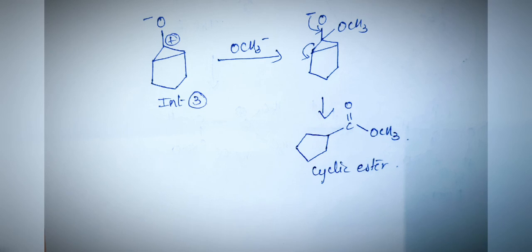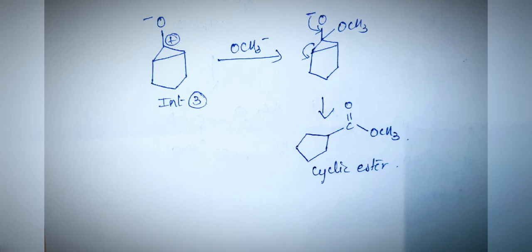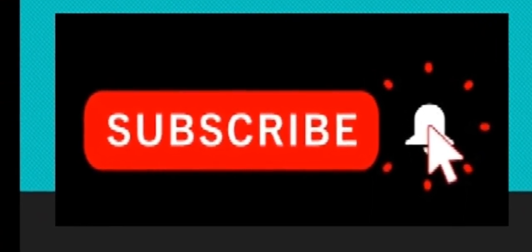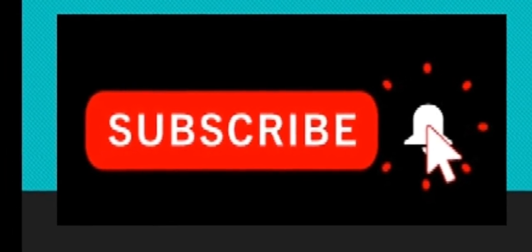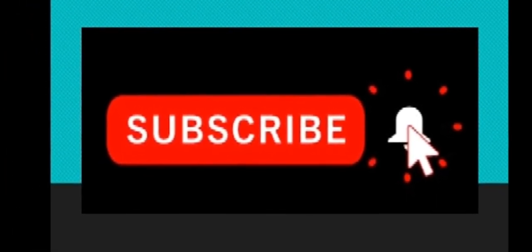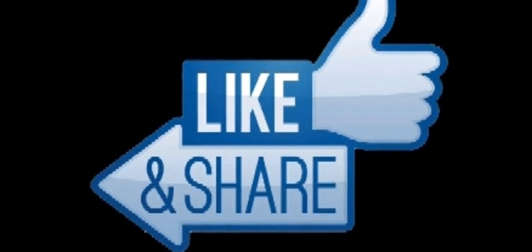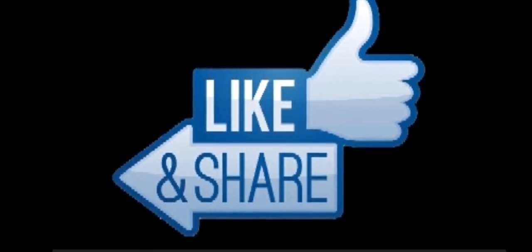In both cases, keto-enol tautomerism is the basic concept behind the rearrangement reaction, as shown by the enolate ion being the first intermediate — only through the enolate ion do you get carboxylic acid or its derivative. That's the Favorsky rearrangement. I hope you all understood and enjoyed learning this. Thank you so much for choosing my videos — please share with friends and subscribe to my channel.